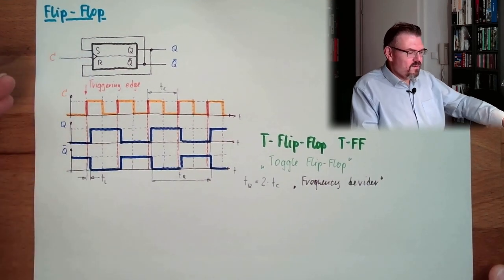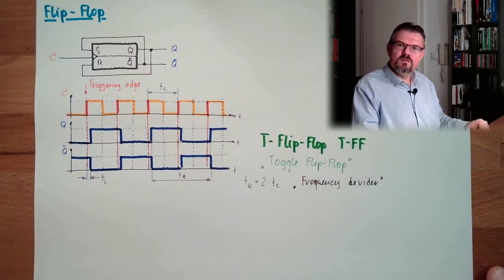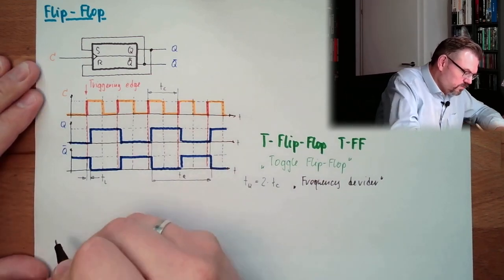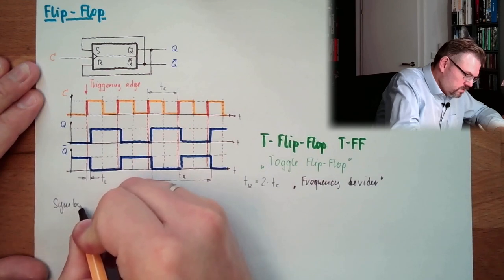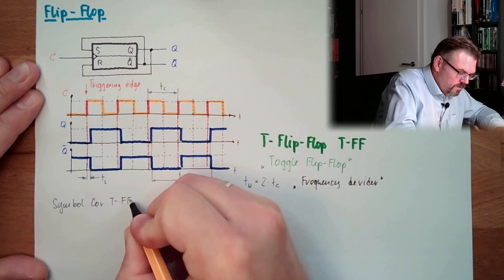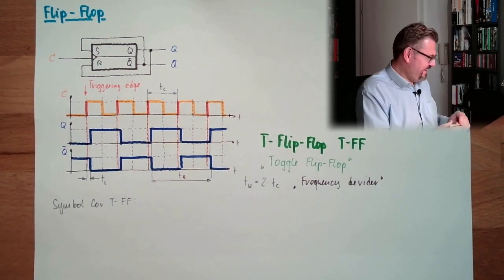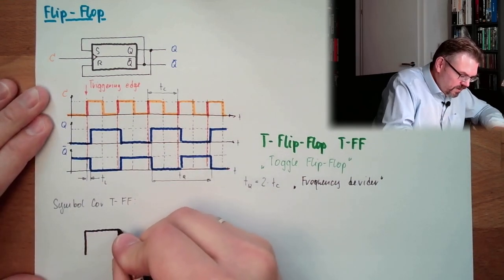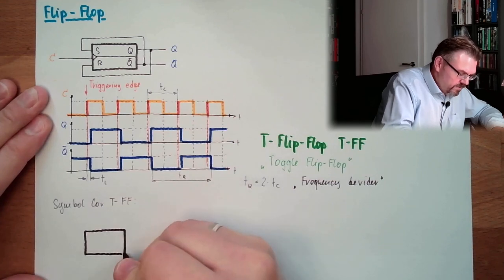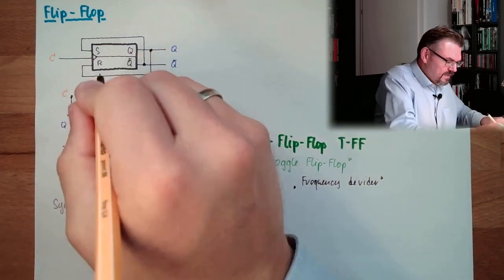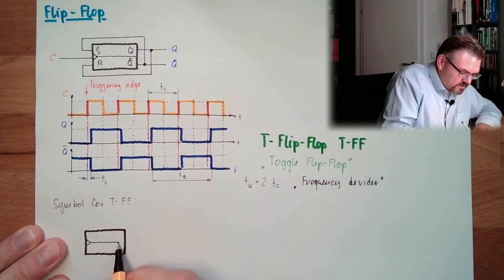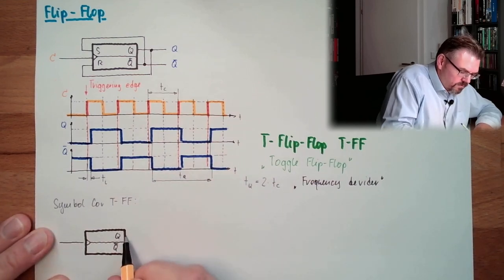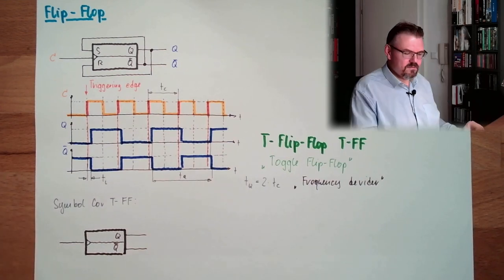Because every second rising edge is triggering. This is why this is also called frequency divider. This is acting as frequency divider. After the T-Flip-Flop, I have only half the frequency. There's also a symbol for this. There's a certain symbol for the TFF. It's looking like that, looking pretty much the same as the memory symbol above. However, there's S and R stuff, this is no longer there. Here we have q and not q, here we have the C input. We have q and not q output. That's the symbol.